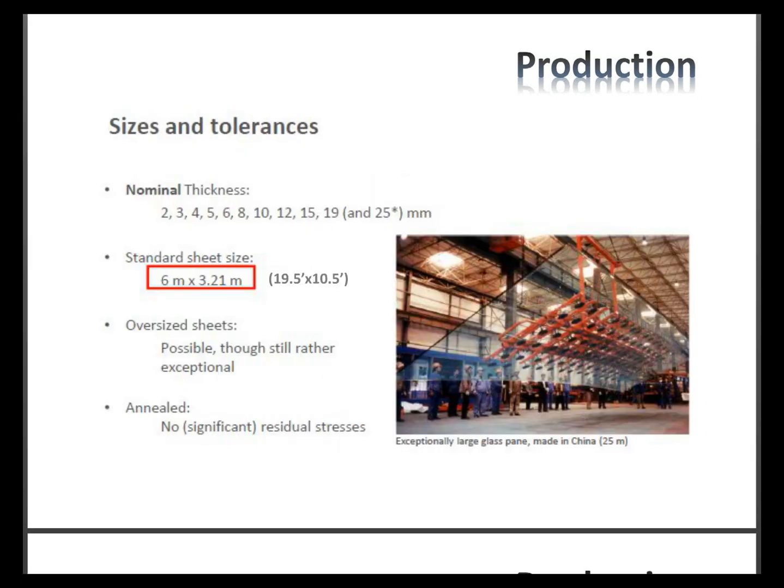Standard nominal thicknesses of glass range from about 2 to 25 millimeters — 25mm being roughly 1 inch. In practice, thicknesses between 4 and 12mm are most common, though 12 to 25mm is also seen regularly. This presentation will mix imperial and metric units, as many people still use metric for glass design and specifications. A standard sheet size is about 19.5 feet by 10.5 feet, though oversized sheets have become increasingly common over the last 10 to 20 years.